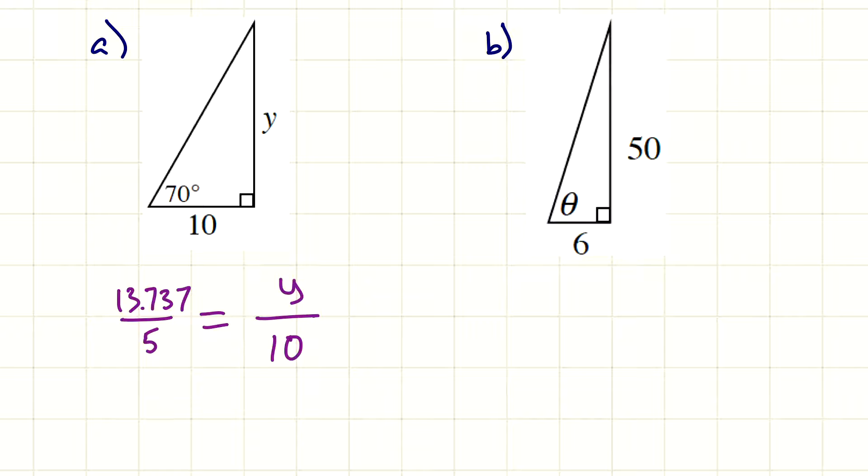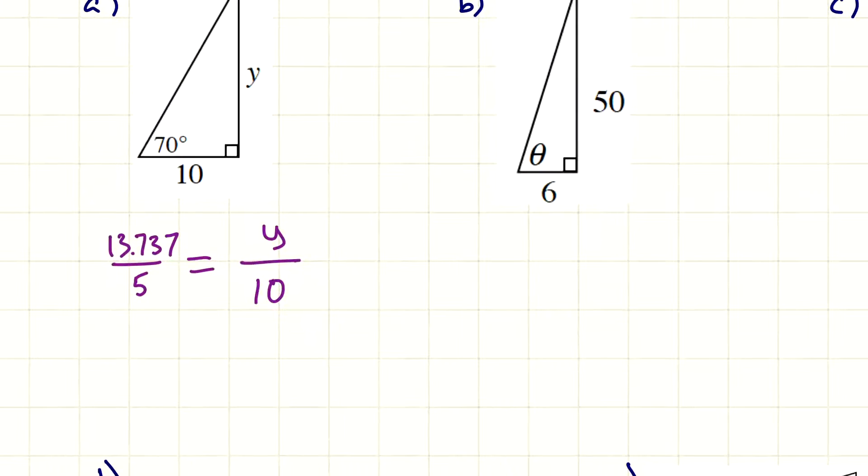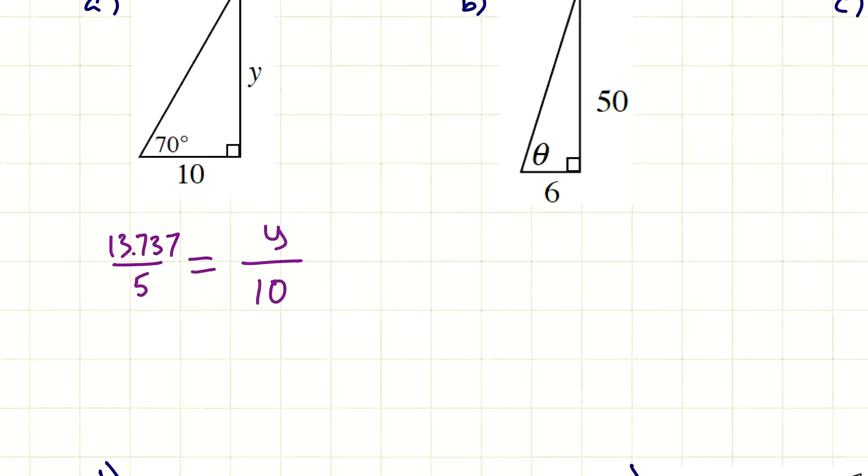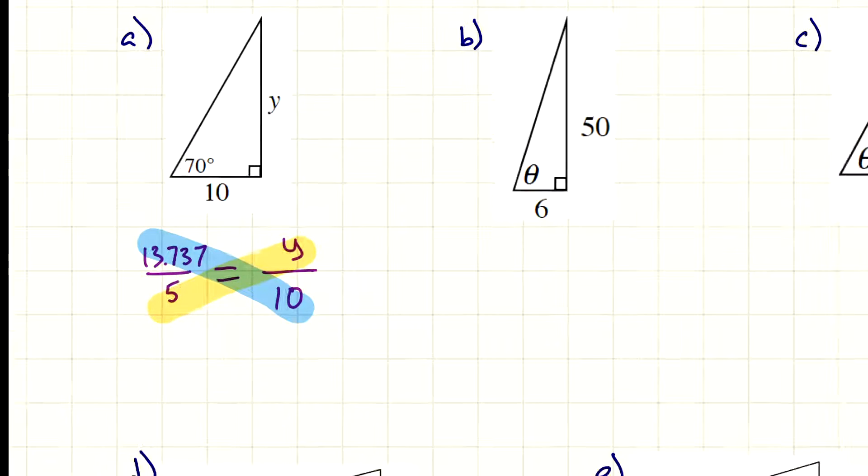That's how you set it up. Notice we really didn't do much work. We just copied down the slope from this triangle and we copied down the slope from the trig table. At this point, you would multiply this out. I think I'll hold off on that. I'll let you do those. Cross multiply and solve. If you need to check your answers on that one, you could definitely reach out to me and I could give you those answers.